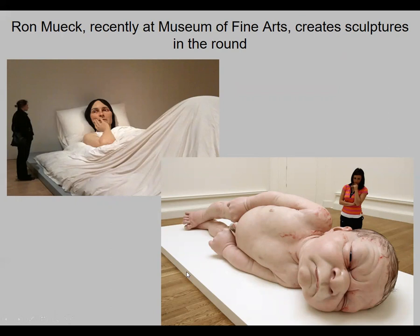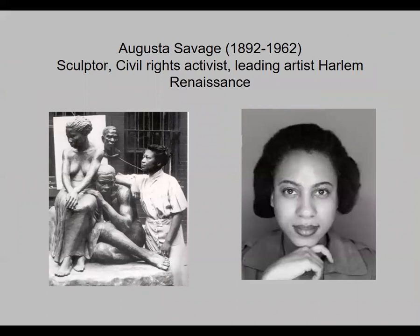There was an exhibit — a few years ago at the Museum of Fine Arts — by Ron Mueck, who used to work for Jim Henson and the Muppets. He makes giant sculptures with hair and fingernails that look so real — pretty frightening — and you almost think they're moving when you see them. These are also Sculptures in the Round. Augusta Savage was a really famous sculptor, civil rights activist, and a leading artist during the Harlem Renaissance.